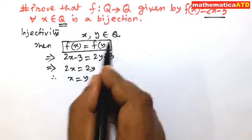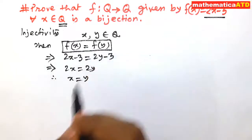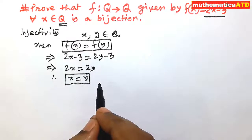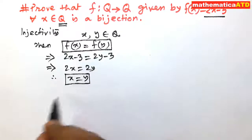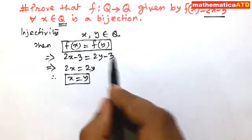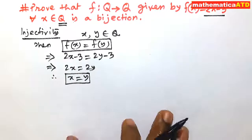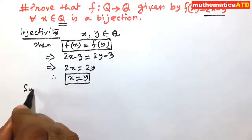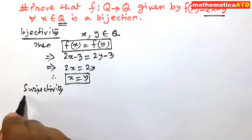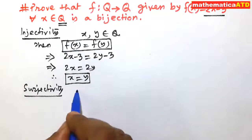We considered f(x) = f(y), meaning two images are the same in the codomain, and we found that their pre-images in the domain are also the same: x = y. This means f is an injective map. Injectivity is verified. Next is surjectivity.